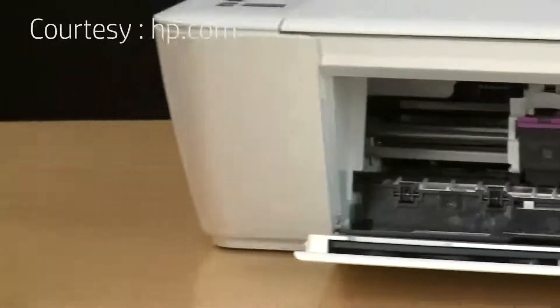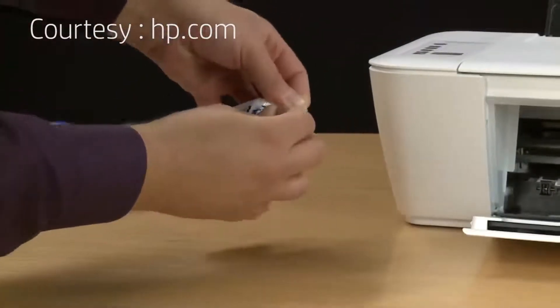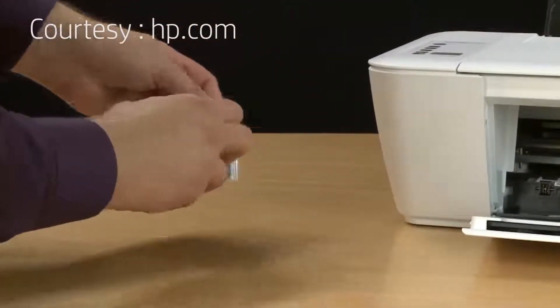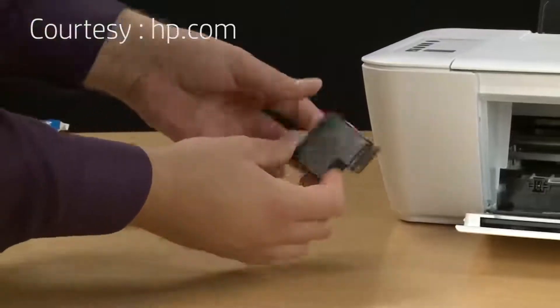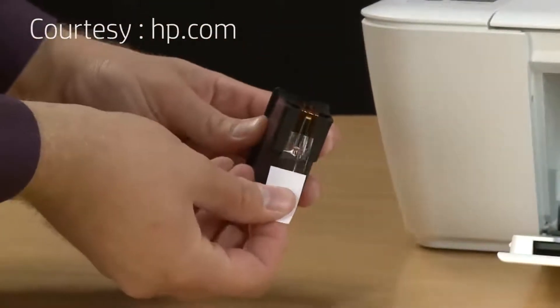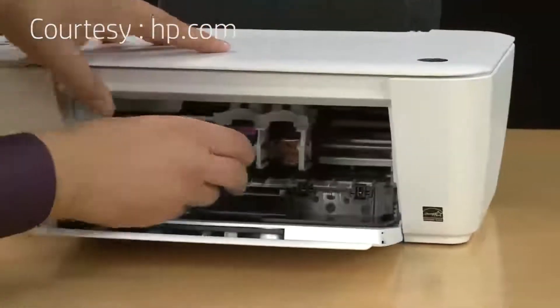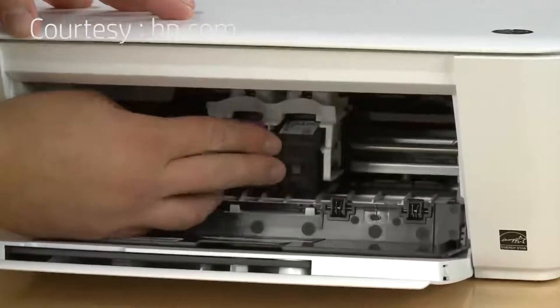Now we'll repeat the same process for the black cartridge. Open up the package using the serrated area and then remove the cartridge from the packaging. Then use that orange piece of tape to expose the electrical contacts and ink nozzle. Install it the same way, sliding it into the slot until it snaps into place.